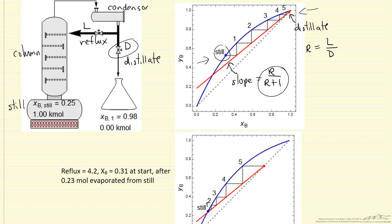So here I'm showing the same Y versus X figure. But now we've evaporated 0.23 moles from the still. So that means the distillate composition has changed significantly, and the still composition has changed.